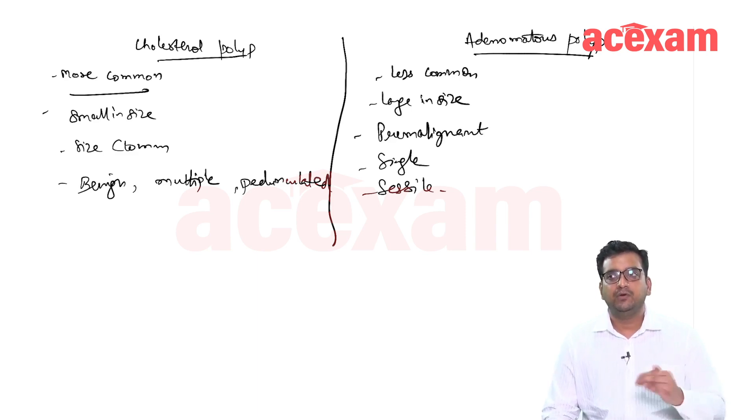Majority of people follow the polyp on repeated ultrasound at a monthly interval or a three monthly interval. If there is increase in the size of polyp or if there is associated gallstones with polyp, then they perform a cholecystectomy.